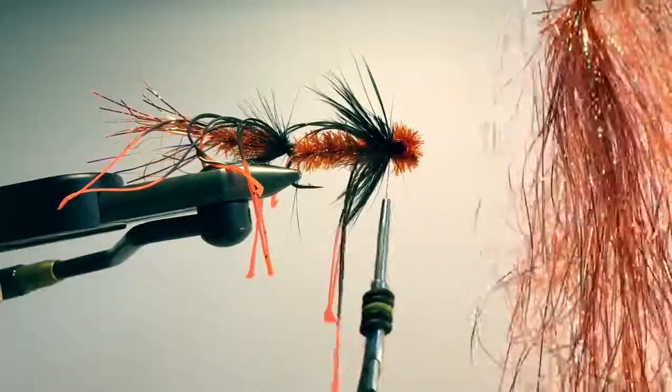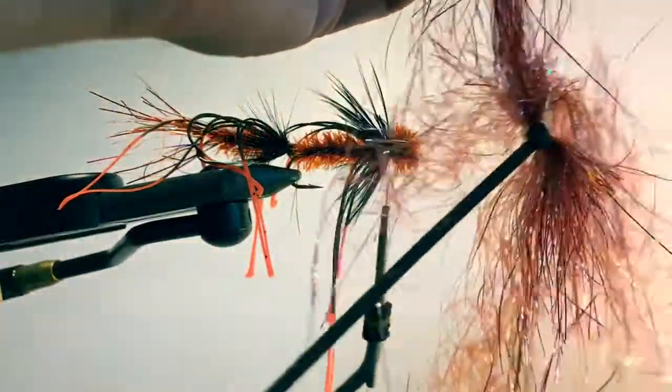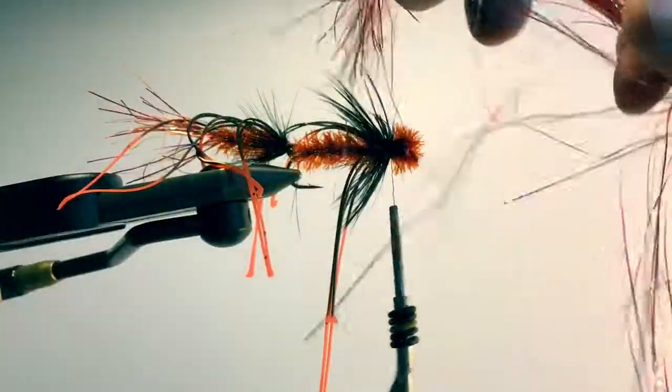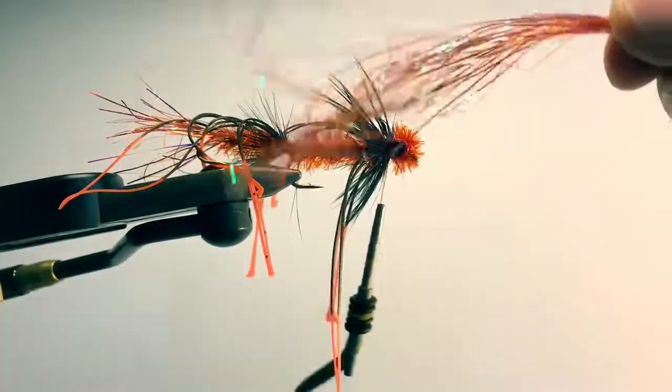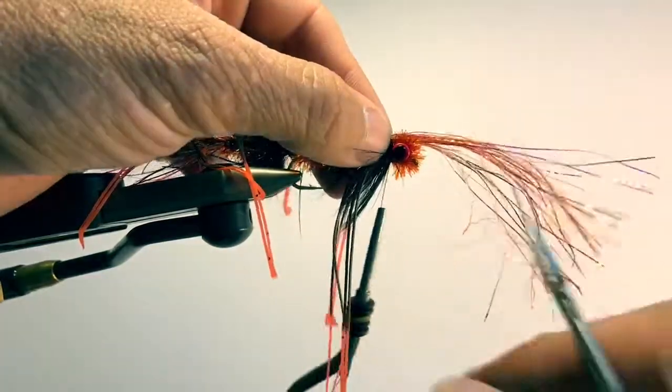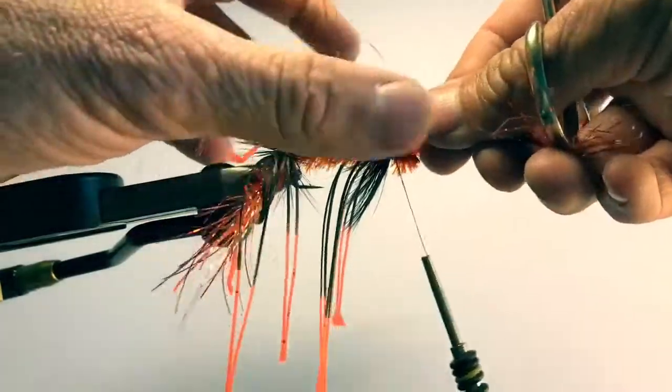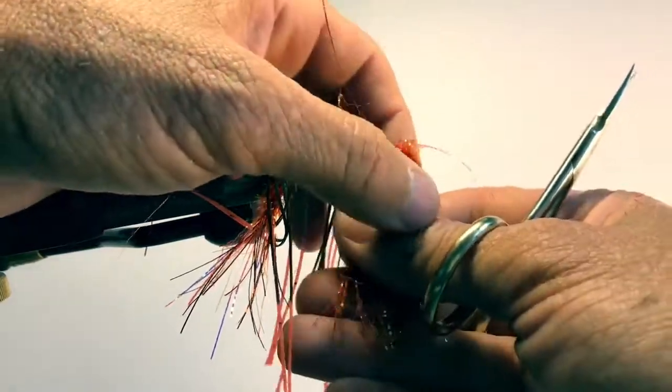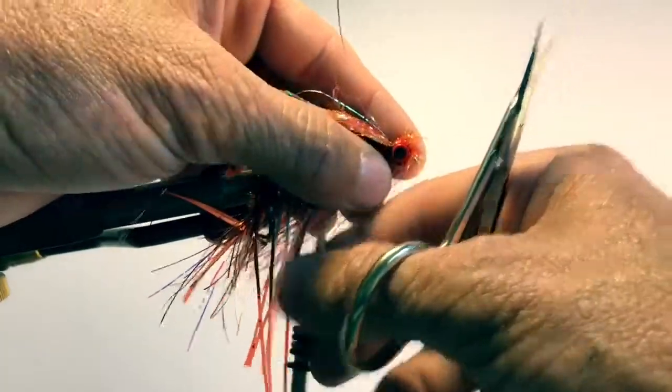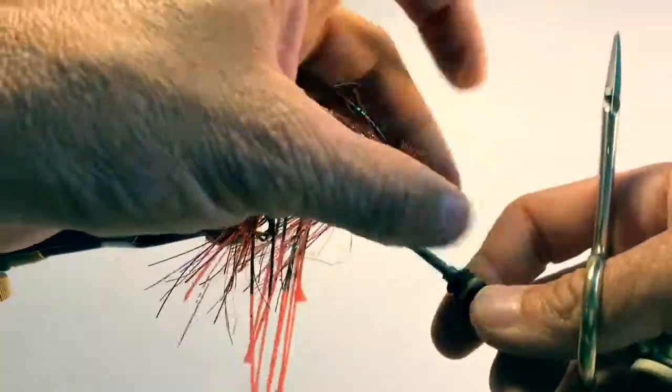Now I'm going to take the longer edge of this and I'm going to find the nice straight pieces right in here. All right. I'm going to lay it down right here behind the dumbbell eyes. Three solid wraps. Bring it forward, pinching it so it goes between the eyes. Let it split over and around the nose or the eye of the hook. And there you have it.